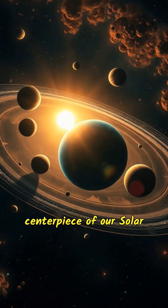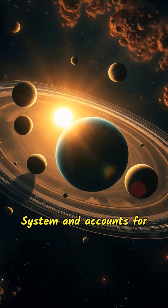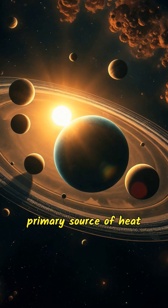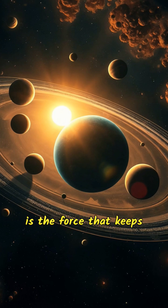The Sun is the centerpiece of our solar system and accounts for about 99.86% of the system's total mass. This massive star is the primary source of heat and light for the planets, and its gravity is the force that keeps the solar system's objects in orbit.